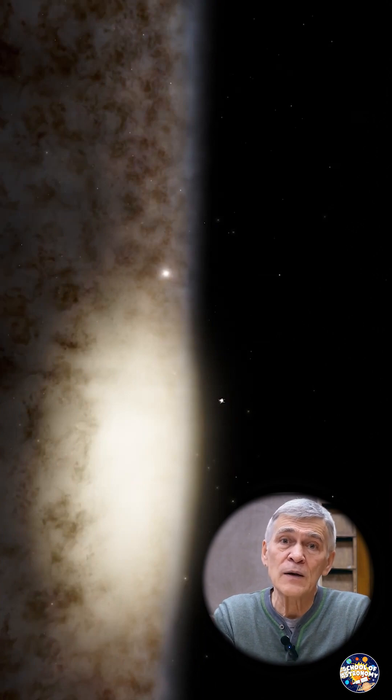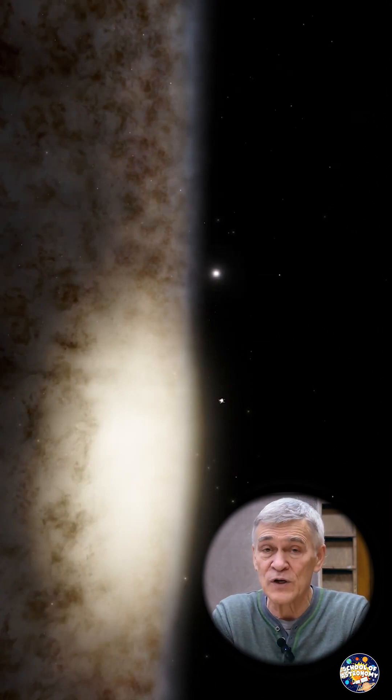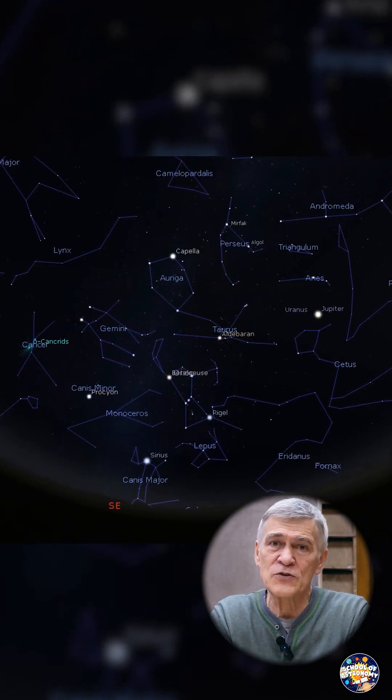Those are the stars that fly from the Galaxy through the galactic disk in which we live. Why don't constellations change their appearance?